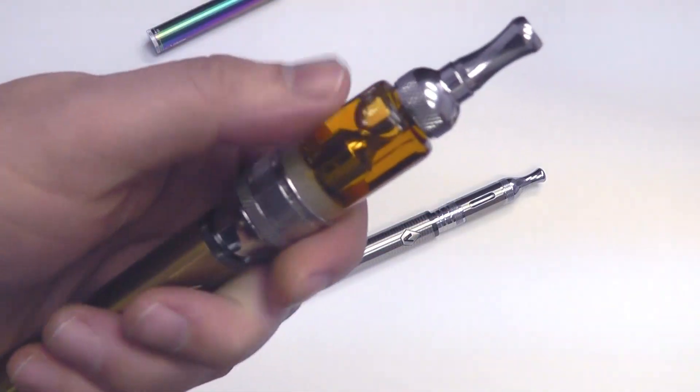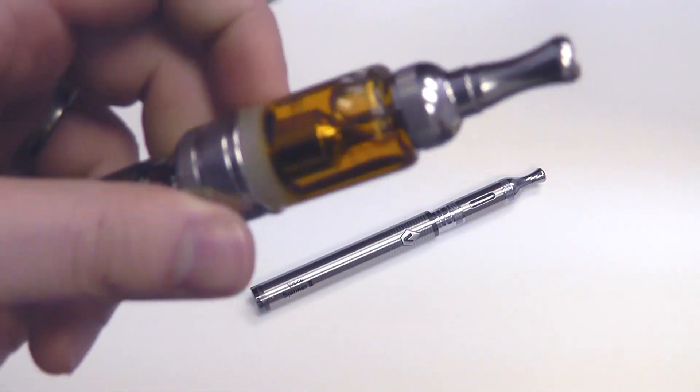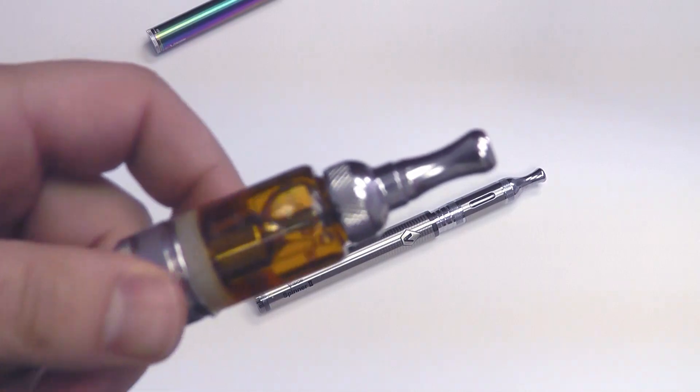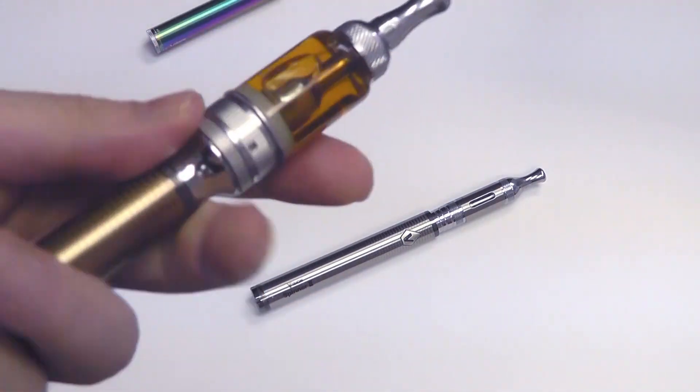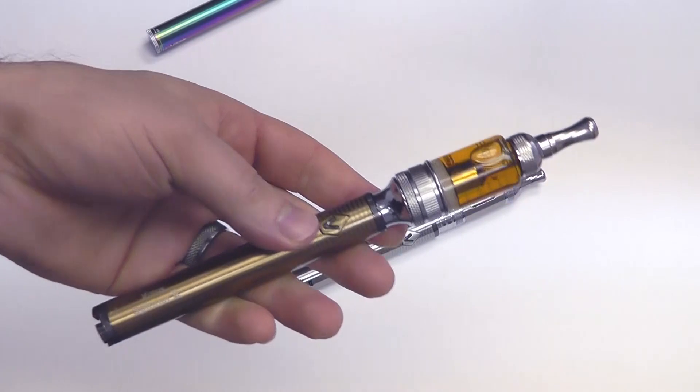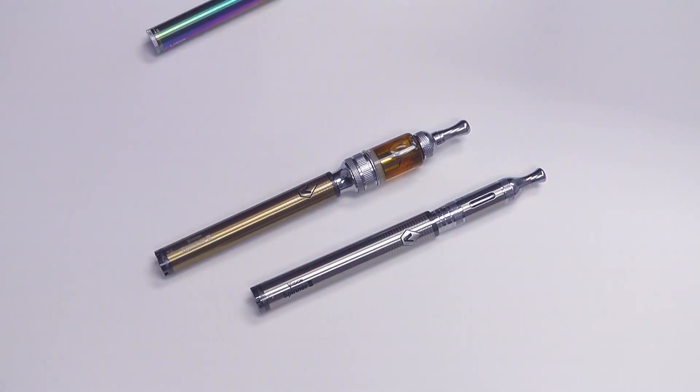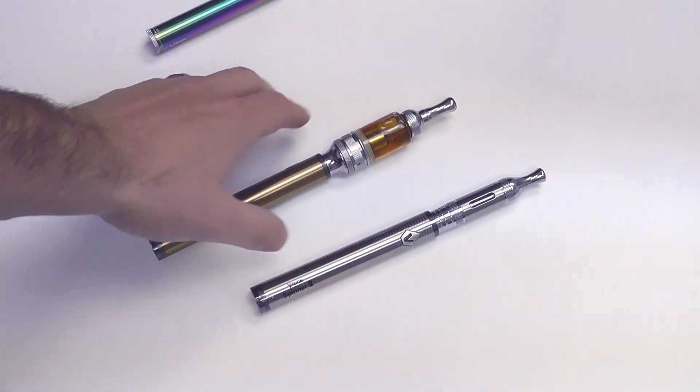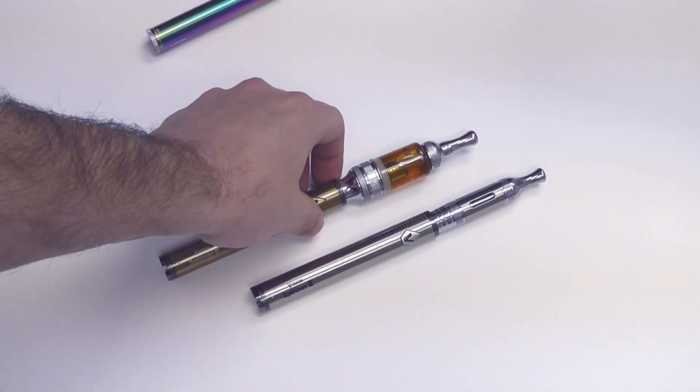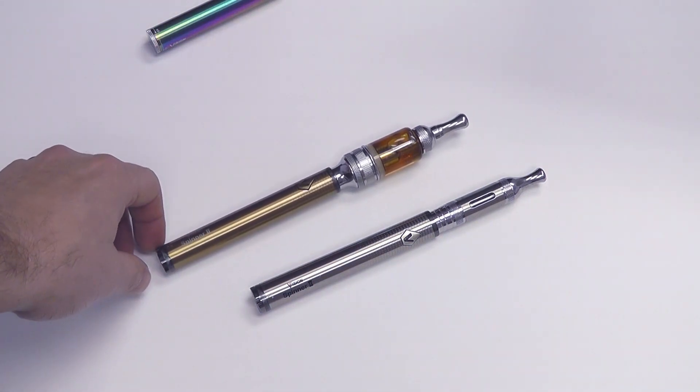I've already showed you what the Nautilus tank looks like on it. Obviously the Nautilus is a massive tank, it has a rated capacity of five milliliters but actually holds closer to six or seven milliliters of juice. It really doesn't look extremely out of place on the battery if you're okay with that tank being a little top-heavy.